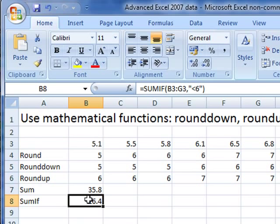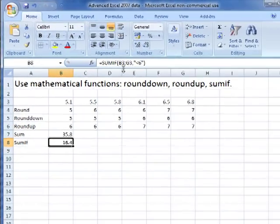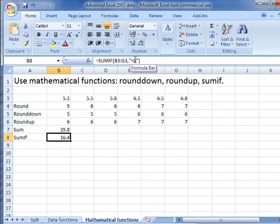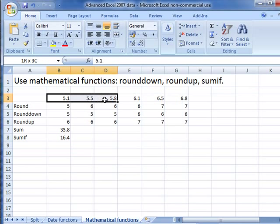See, the result is 16.4. What has happened is it's looked at each one of these numbers and compared it to 6 or less than 6. If it's less than 6, it's added it up. Let's see if it's right. 5.1 is less than 6, 5.5 is less than 6, 5.8 is less than 6. All the rest of those are greater than 6.